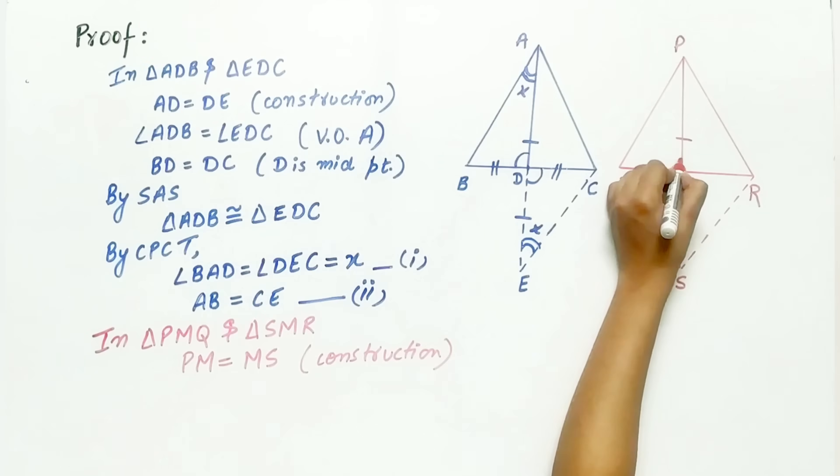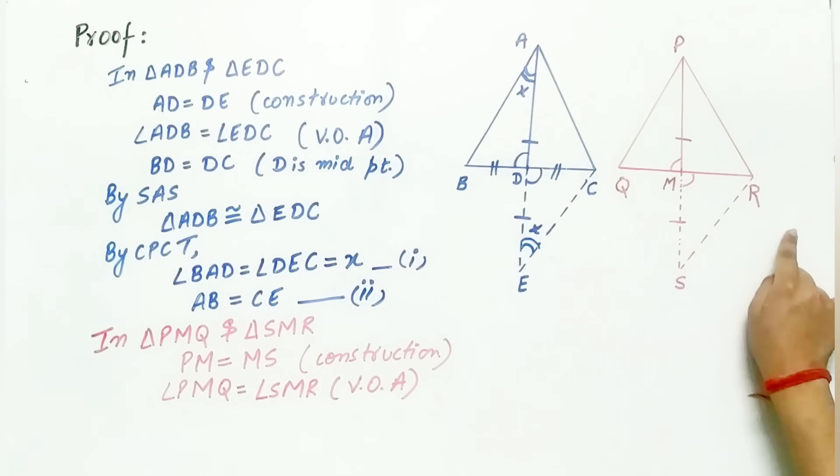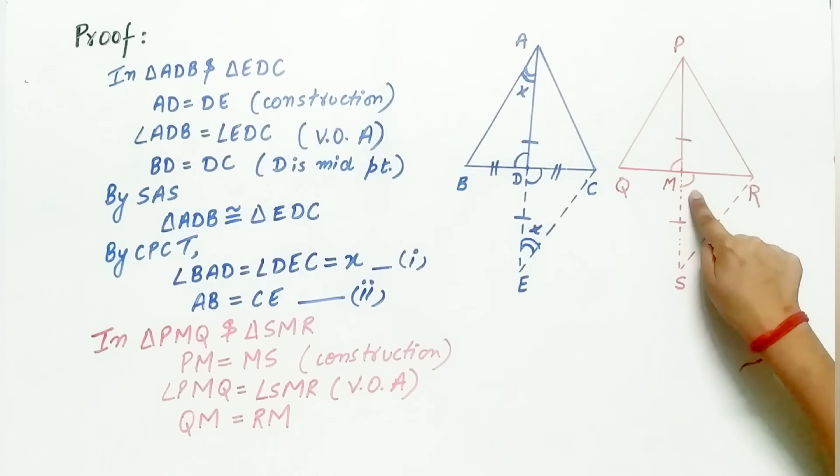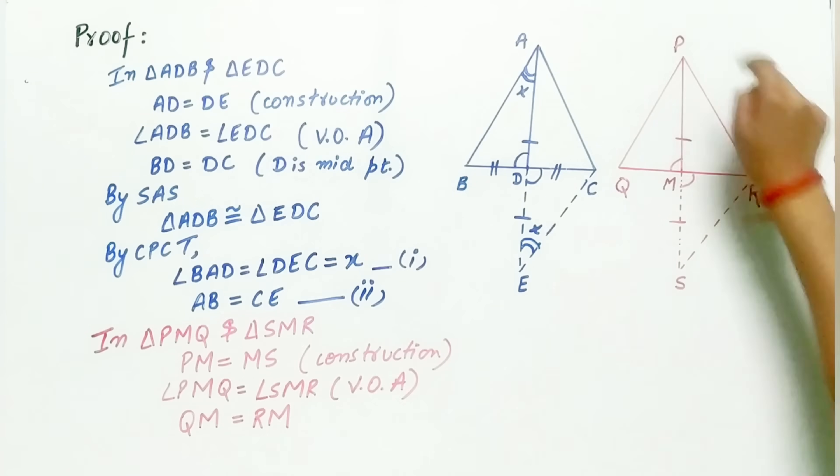Angle PMQ is equal to angle SMR. Vertically opposite angles. And QM is equal to RM. Why? Because M is the midpoint of QR, PM is the median of triangle PQR.